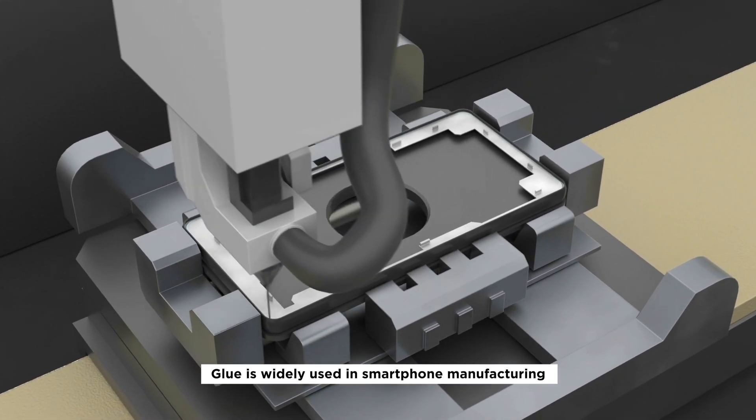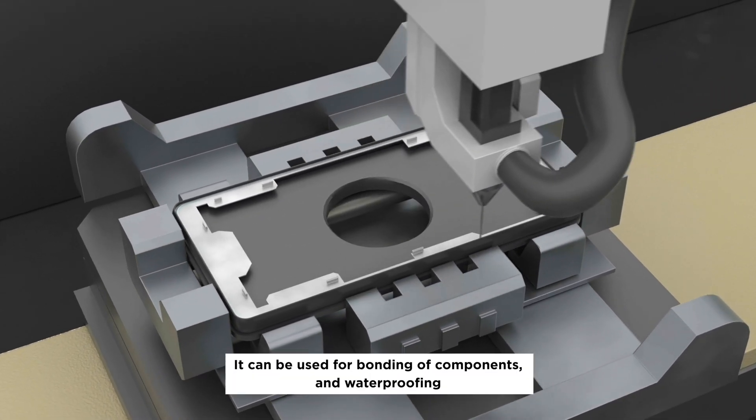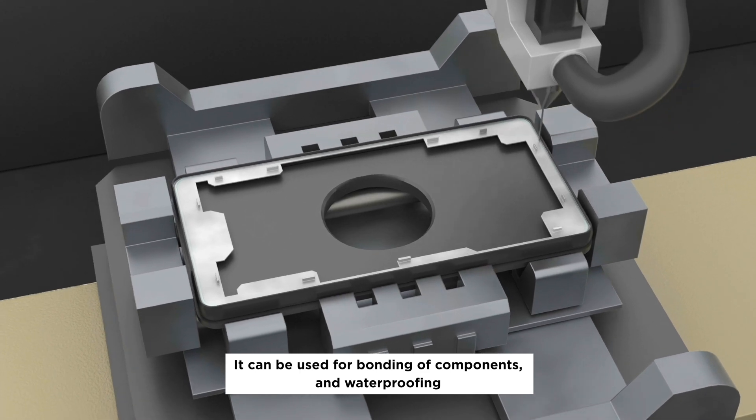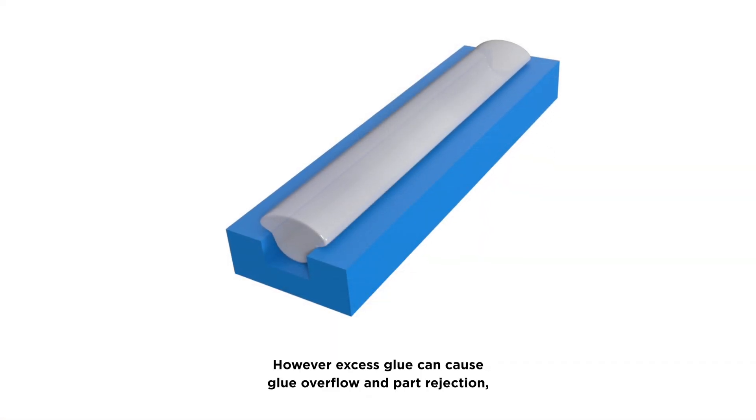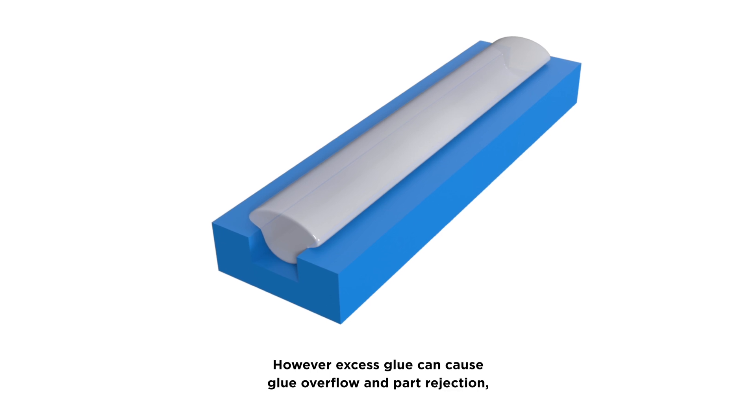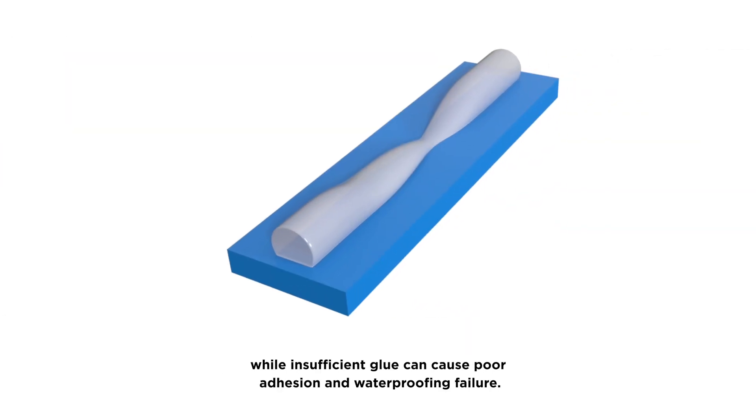Glue is widely used in smartphone manufacturing. It can be used for bonding of components and waterproofing. However, excess glue can cause glue overflow and part rejection, while insufficient glue can cause poor adhesion and waterproofing failure.